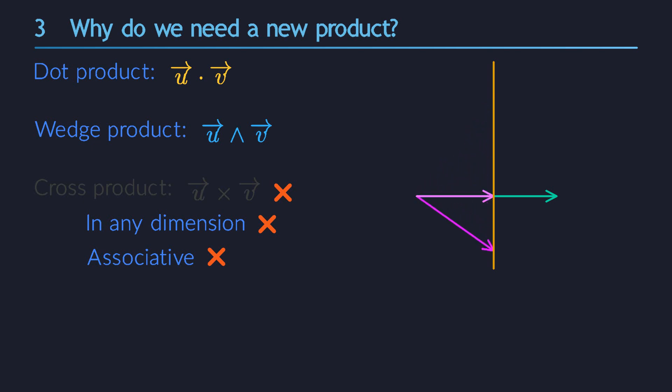The wedge product has a similar problem. It cannot be inverted either. So we have to conclude that none of the products we have at our disposal will serve our purposes. We have no choice but to invent a new one from scratch.